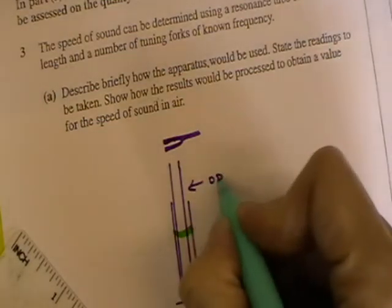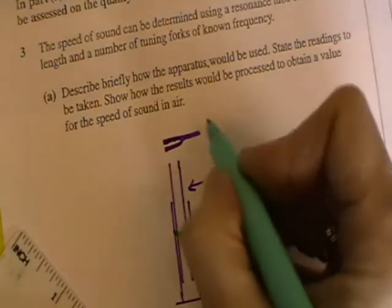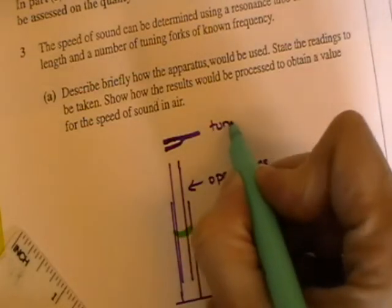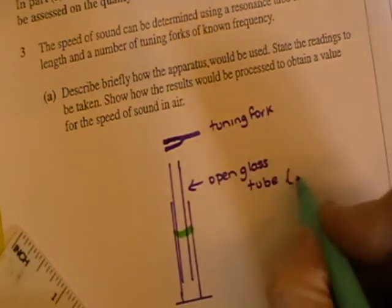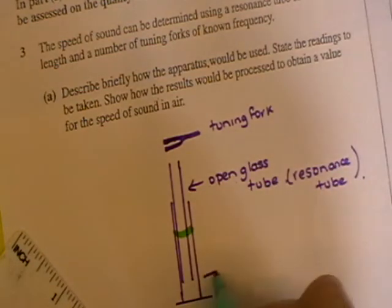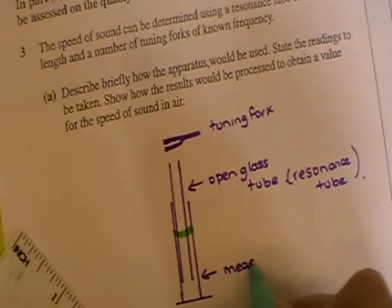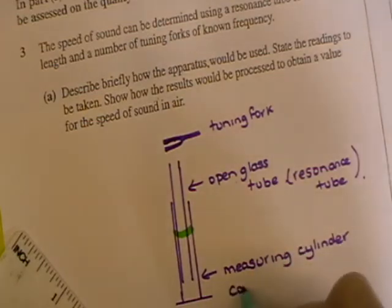Okay, so you would label that. This is an open glass tube. A tuning fork. I've called that a glass tube, they've actually called it a resonance tube.